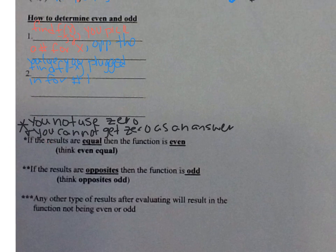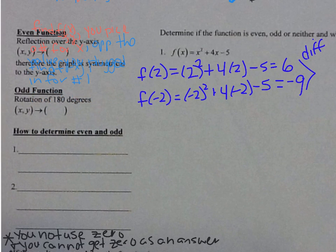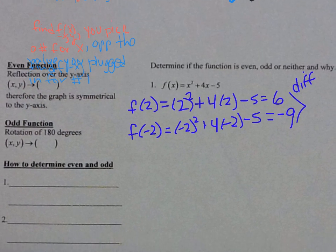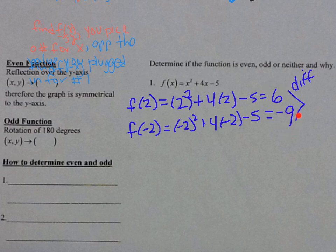Here are the rules: if the results are equal, the function is even — think 'even equals equal.' If the results are opposites, the function is odd — think 'opposites, odd.' Any other result means the function is neither even nor odd. Since we got 6 and negative 9 — one positive, one negative, but not opposites — this is neither.